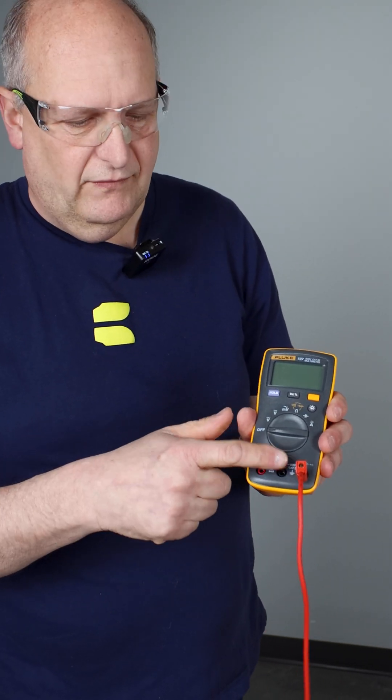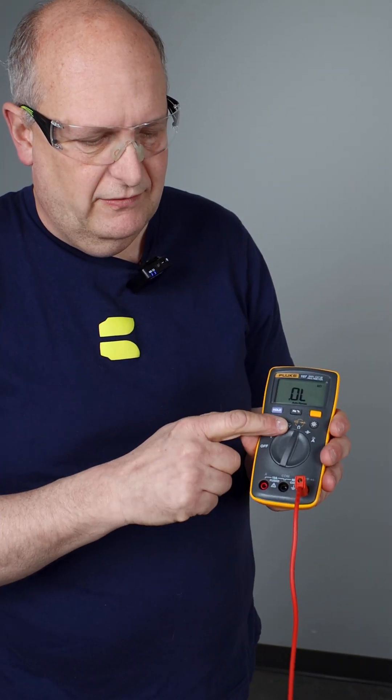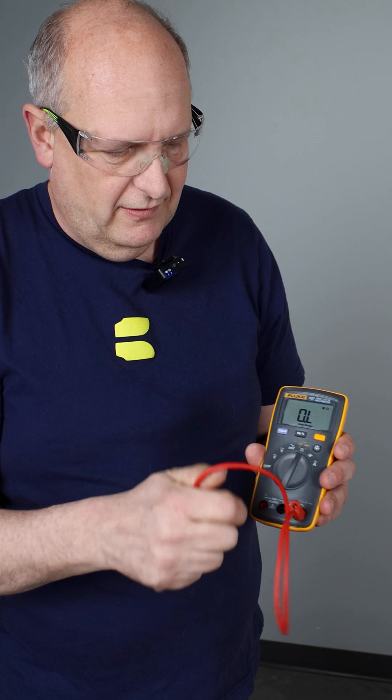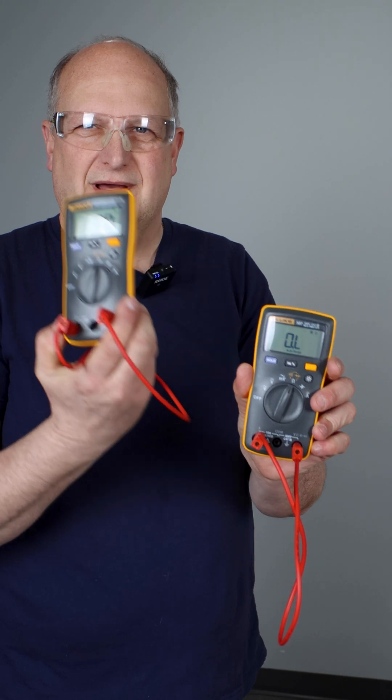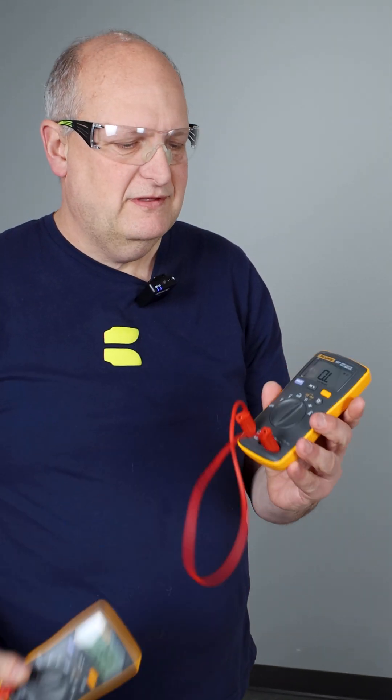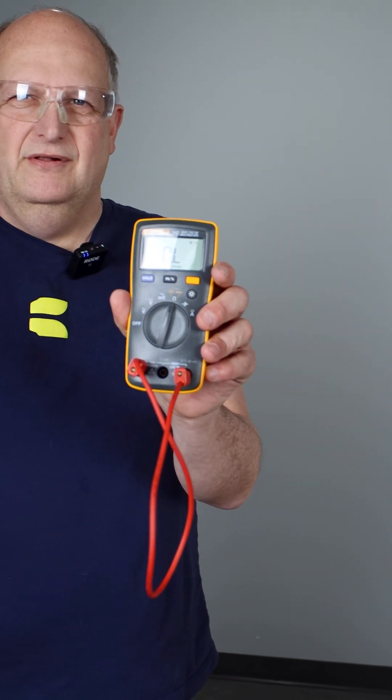Put it onto the volt ohm scale here, move it to ohms, turn a little light here, and then we can see the difference between the two. We have a meter that has a good fuse and a meter that has a blown fuse.